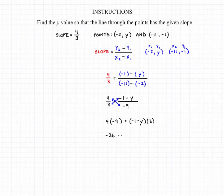We distribute everything through, we'll have negative 36 equals negative 3 minus 3y. We add 3 to both sides of the equation, we'll have negative 33 is equal to negative 3y.